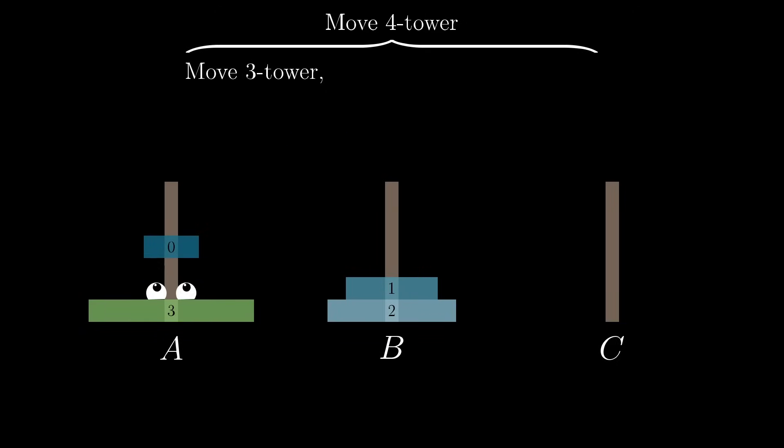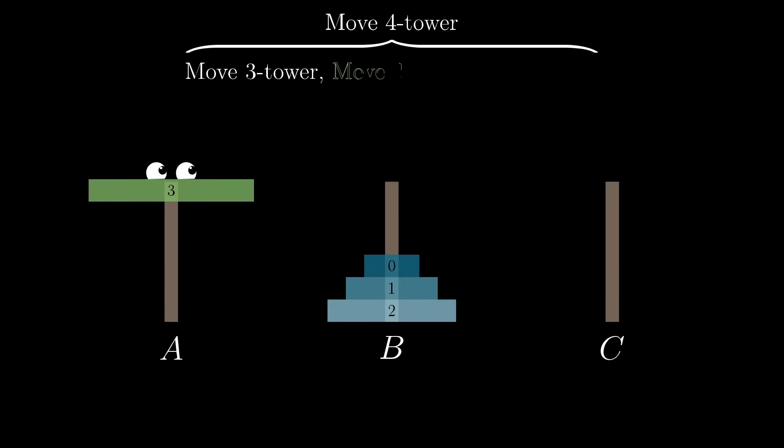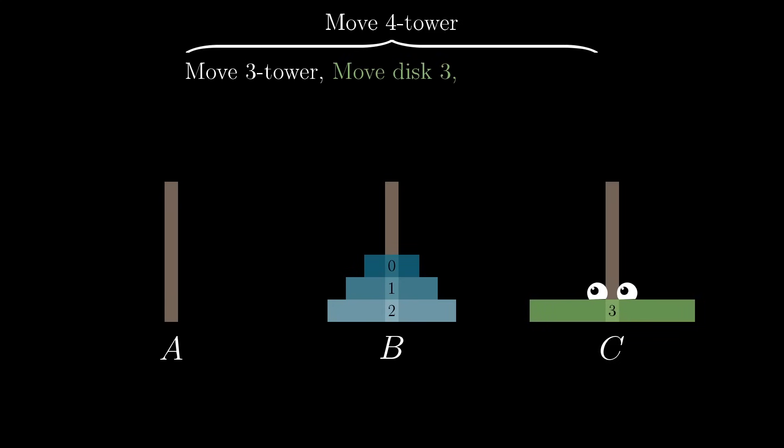If any of these disks are on top of 3, it can't move. If any of them are in spindle C, it can't move there. So, somehow, we have to get 2, 1, and 0 off. Having done that, then we can move disk 3 over there. And then disk 3 says, I'm set. You never need to move me again. Everyone else, just figure out how to get here.